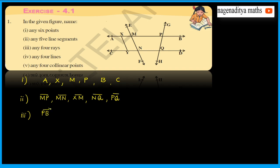PB is a ray, QD is a ray, NF is a ray, and ME is a ray. So these are the four rays.